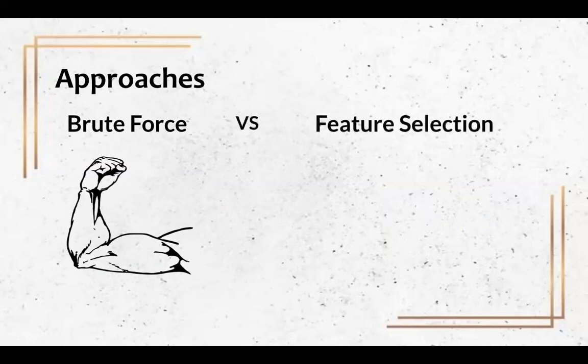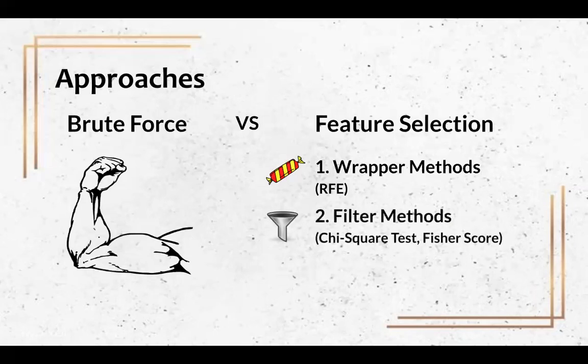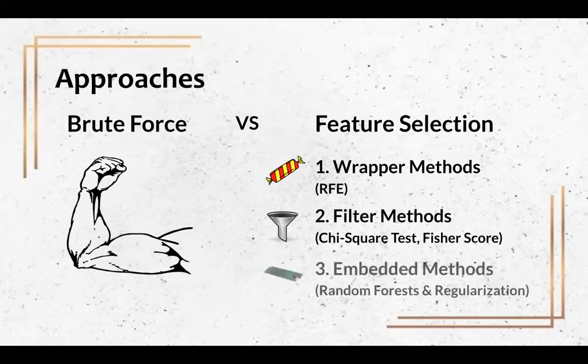Hence, we focused on analytical feature selection techniques, which can be grouped into three categories. We use wrapper methods such as recursive feature elimination, where the least useful features are eliminated through recursion. Filter methods such as the chi-square test identify features that do not change the output. Lastly, we use embedded methods such as random forest to find features that can best differentiate autistic individuals.